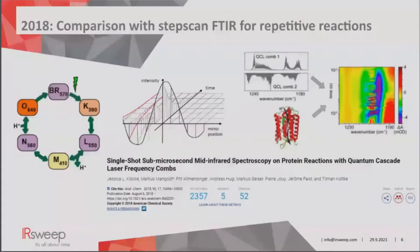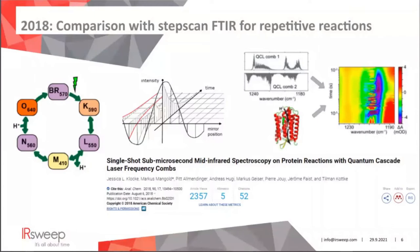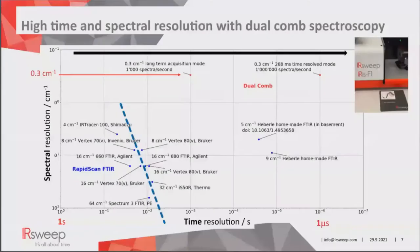We focus today on the speed advantage of dual-comb spectroscopy. There are data from an early publication with Tillmann Kötke on the bacterial rhodopsin photocycle, which is repetitive, where the technology was compared with StepScan FTIR — something only possible with a repetitive measurement. At that time, we were using one of the first lasers at 1200 wavenumbers.